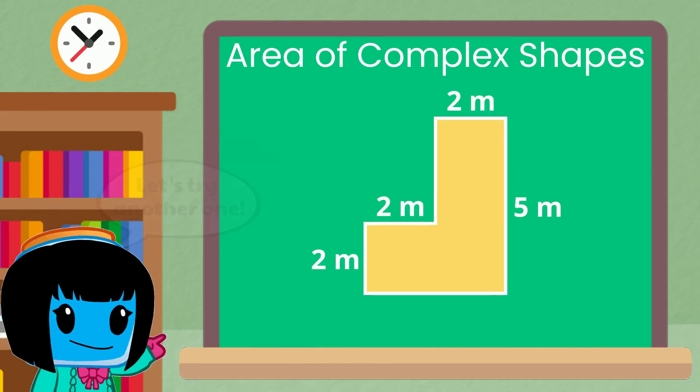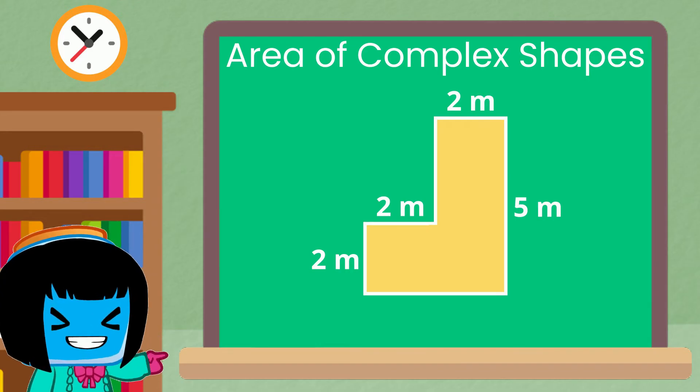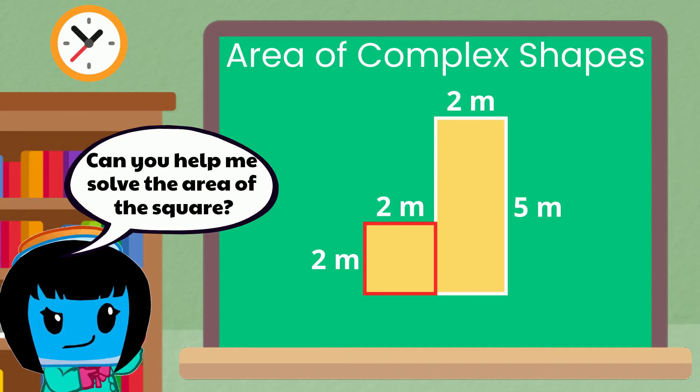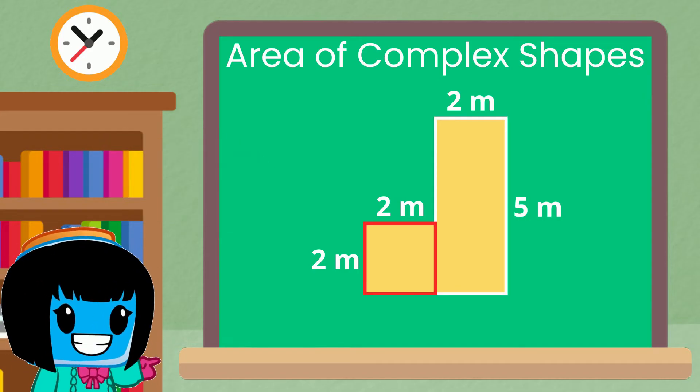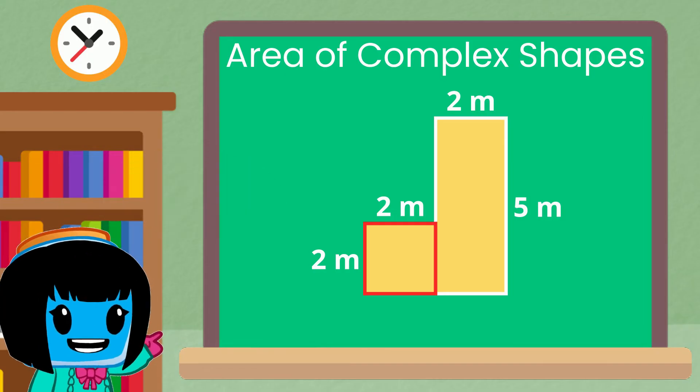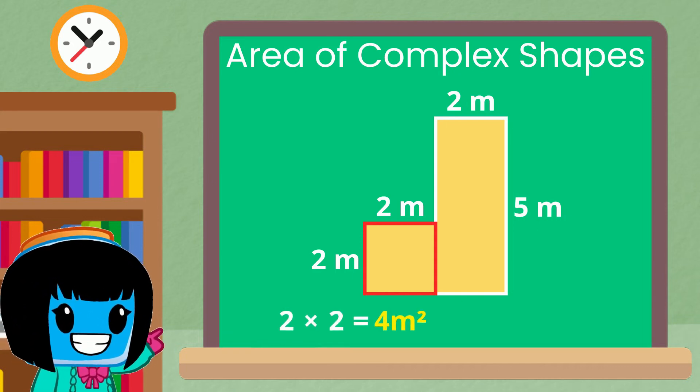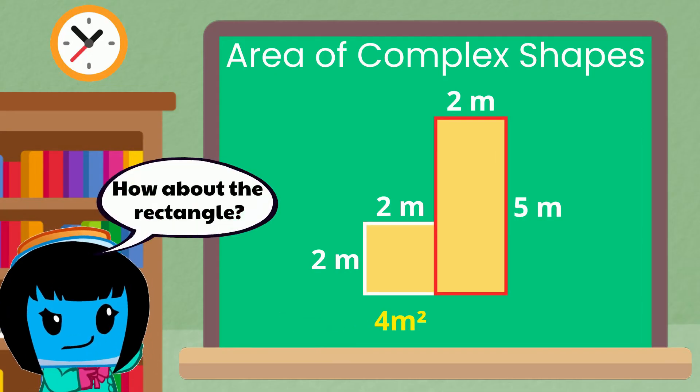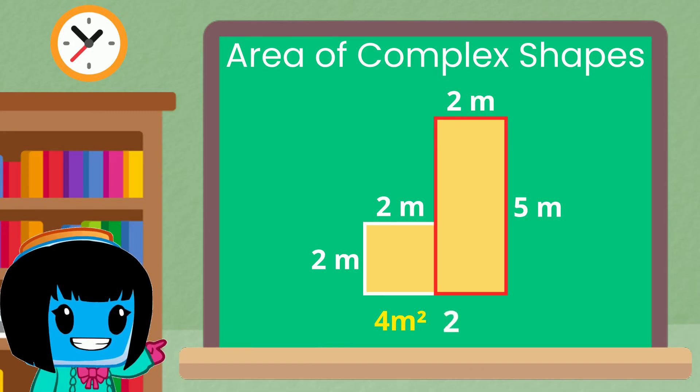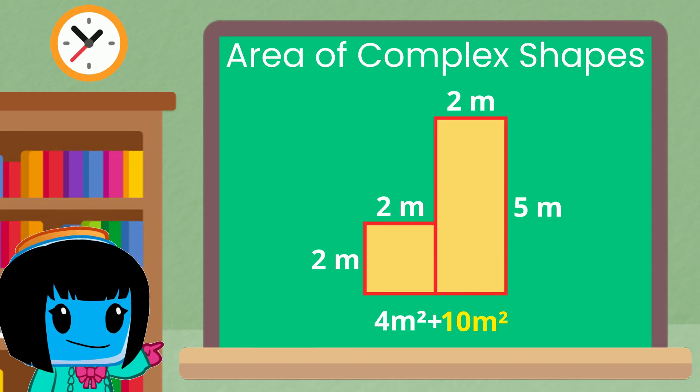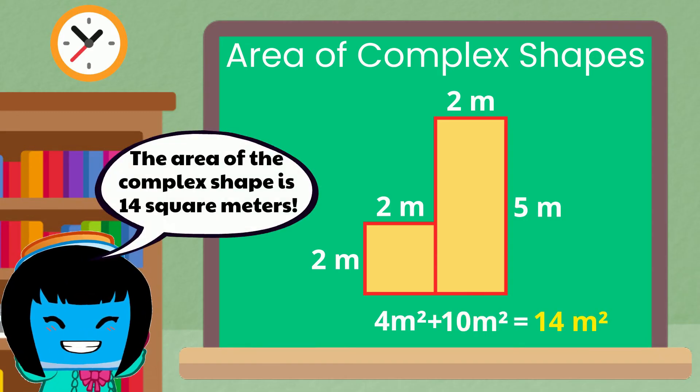Let's try another one. For this next complex shape the measure of the sides are already given. So first let's cut it this way so we have one square and one rectangle instead. Can you help me solve the area of the square? Since the side measures are already given simply multiply them. That's right the area of the square is four square meters because two times two equals four. How about the rectangle? Multiplying the sides we have two times five equals ten square meters. Finally, let's add the areas. Four plus ten equals fourteen square meters.